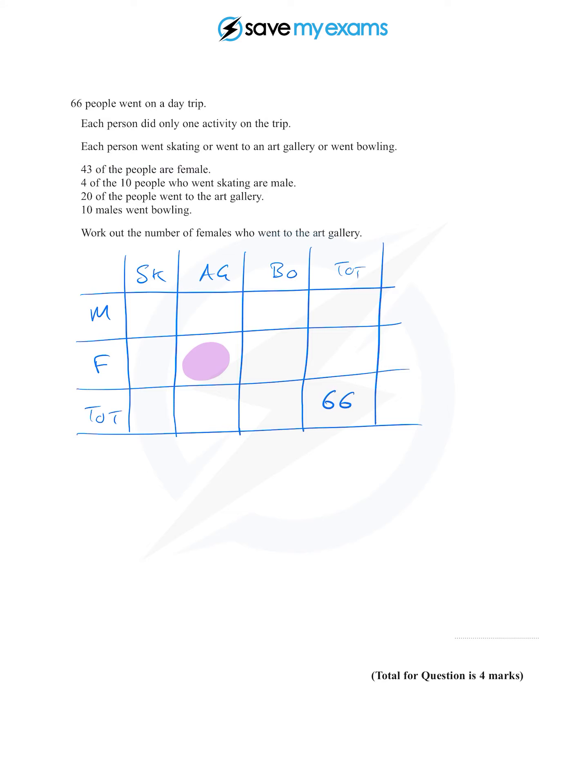You can see that that's going to allow us to find out how many males there are. We'll do that in a minute though if we need to. The next piece of information we're given is that four of the 10 people who went skating are male.